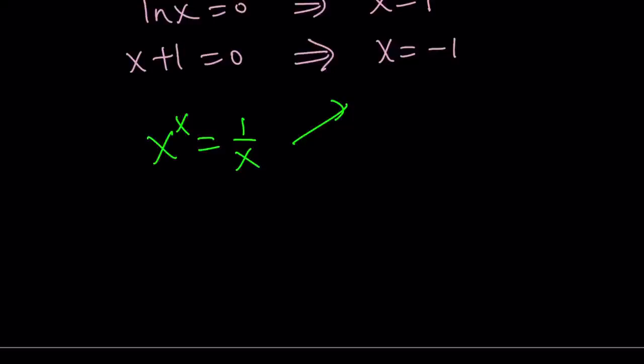So if x is 1, 1 to the power of 1 equals 1 over 1. Check. Great. And if x is negative 1, negative 1 to the power of negative 1, which means the reciprocal of negative 1, which is 1 over negative 1, which is negative 1, is equal to 1 over negative 1. We already talked about it, and that also checks.